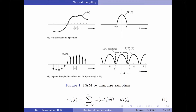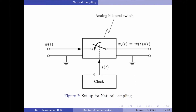Let us move on to the second technique: PAM signal generation using natural sampling. Natural sampling signals are generated by passing the input signal through a switching circuit. Here we have an analog bilateral switch. Whenever the switch is closed, the input is passed to the output; when open, the output is zero. The closing and opening of the switch is controlled by the clock signal, which is a Dirac comb function — a train of impulses. Therefore, PAM by natural sampling is generated using a pulse train s(t), called the sampling signal, to operate an electronic switch.